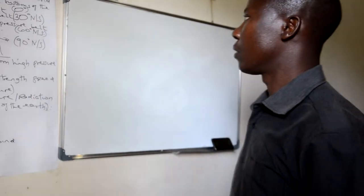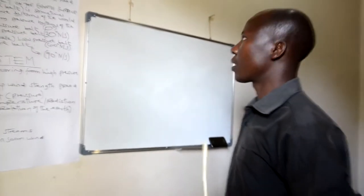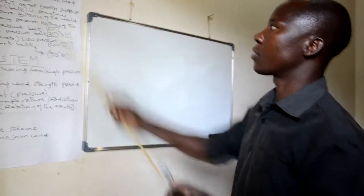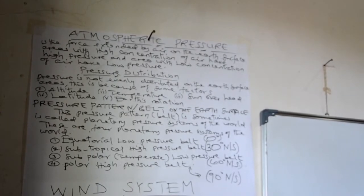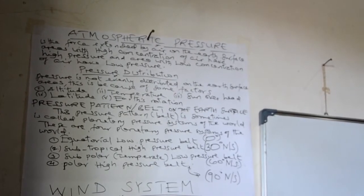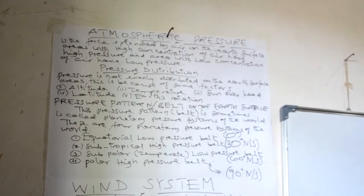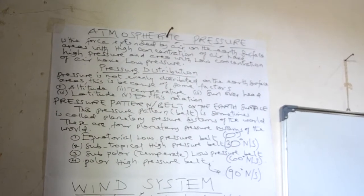Dear students, let's jump to another subtopic or element of weather called atmospheric pressure. As I told you, elements of weather consist of differences which start with temperature, humidity, cloud cover, heat station, and we have to discuss about atmospheric pressure. What is the meaning of pressure?